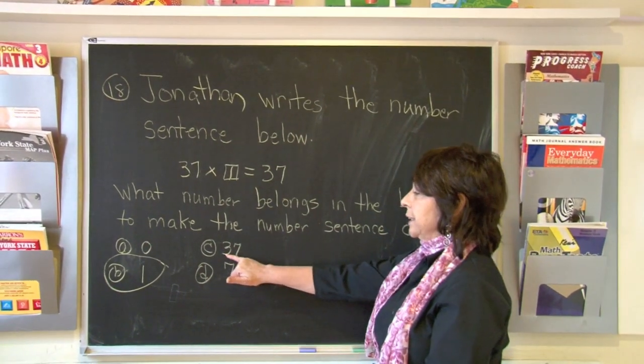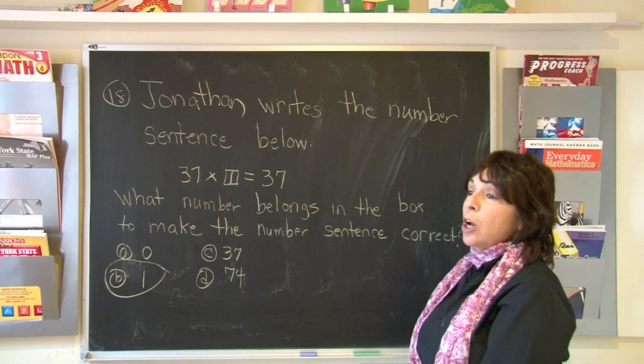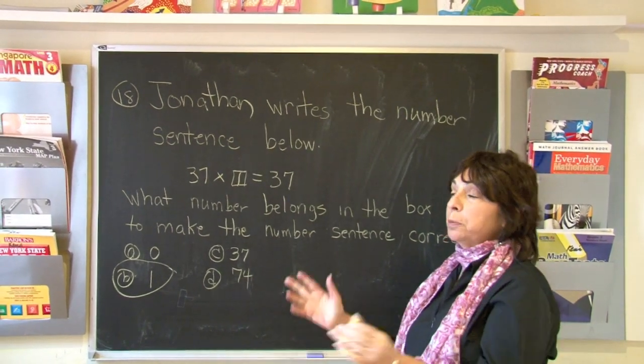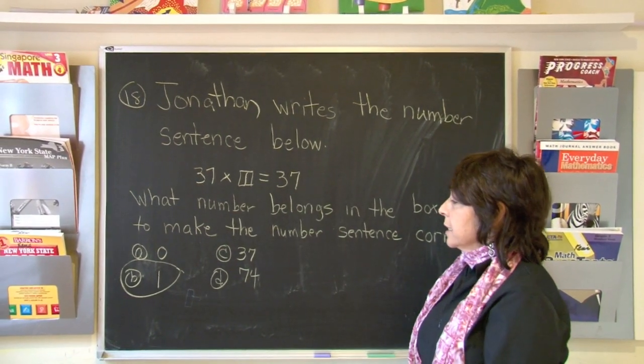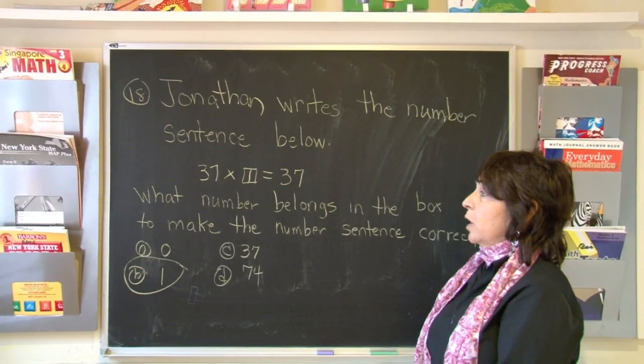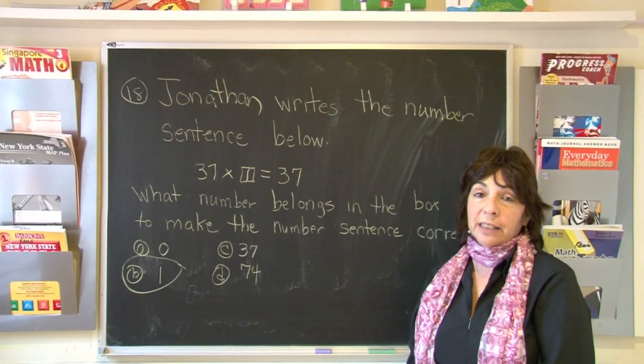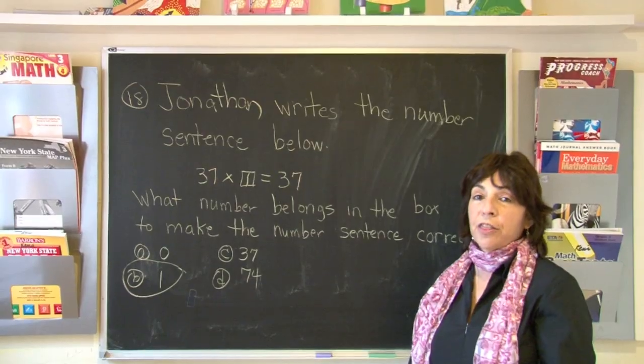If we had multiplied 37 times 37, we would have gotten a number much bigger than 37. The same for D, 74. 37 times 74, we would have gotten a number much greater than 37.